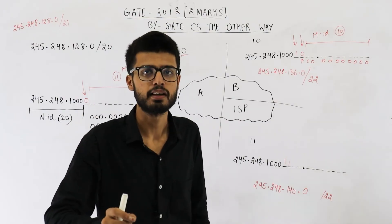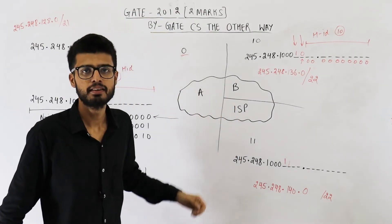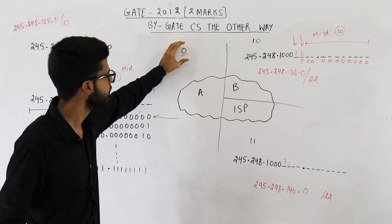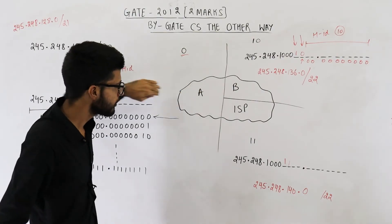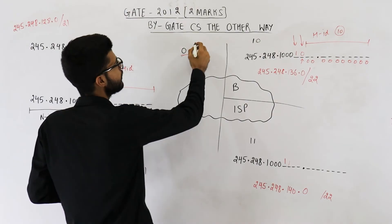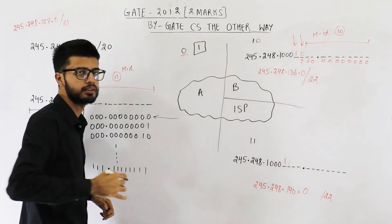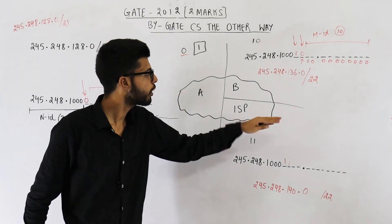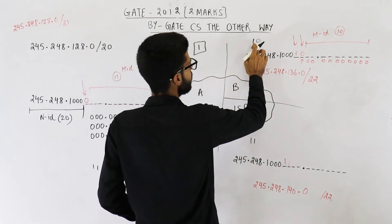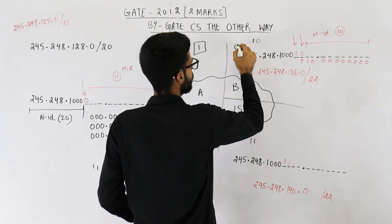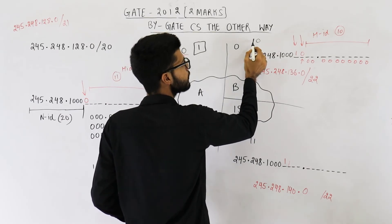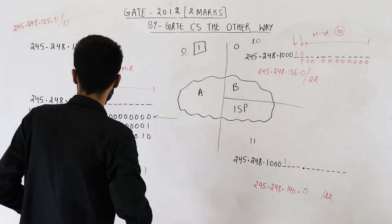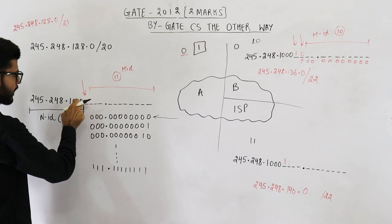The only exception is our assumption about which bit value corresponds to which side. We assumed the fixed bit's value would be zero for A's half, but another valid choice is that the value of this first fixed bit is one for A. So now that bit is one for A and zero for the other side.